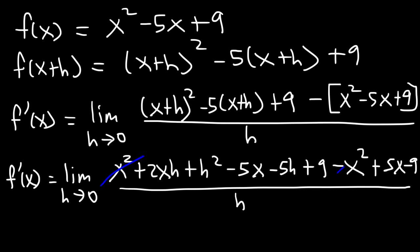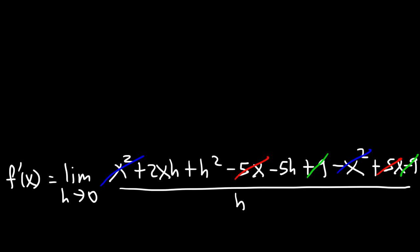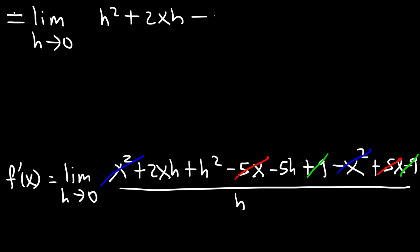So x squared and negative x squared cancel. Negative 5x and 5x will disappear. And 9 and negative 9 we can get rid of. So now we have left over the limit as h approaches 0 of h squared plus 2xh minus 5h, divided by h.